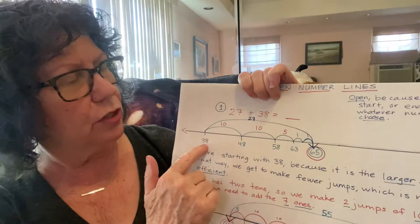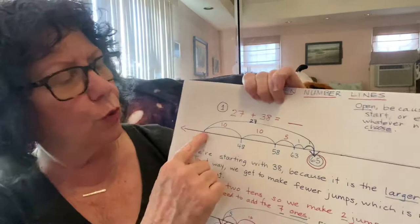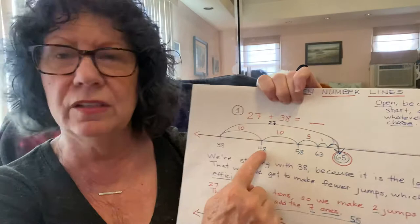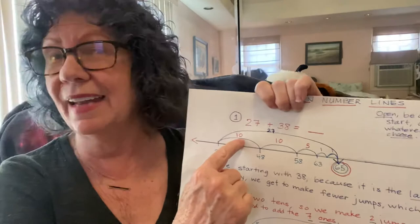We look at 27. It has two tens. So we're going to make two jumps of 10. And what's nice about making a jump of 10 is that 38 has an eight in the ones place. We know that the next number is also going to have an eight in the ones place because we have a 10 and it has no ones.